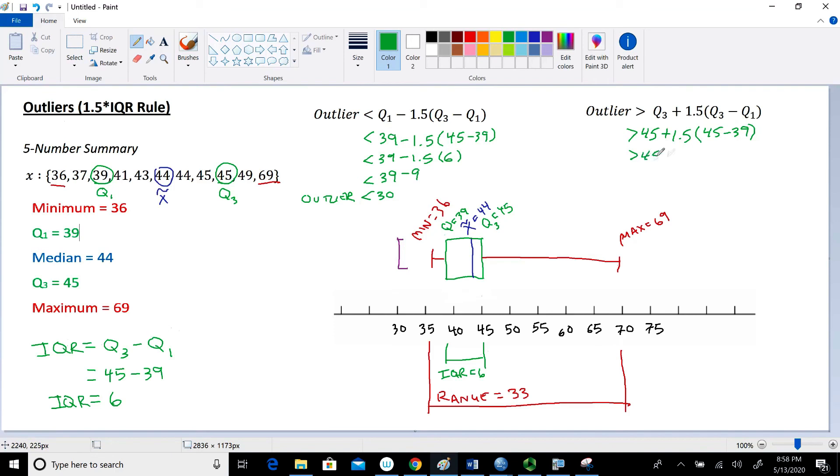So we have 45 plus 1.5. 45 minus 39 is 6. This would be 45 plus 1.5 times 6 is 9. 45 plus 9 is going to be 54. So we have an outlier if we have any values that are larger than 54. So that fence of 54 is going to be approximately right here. So if we have any values in the data set that exceed 54, those are considered outliers.